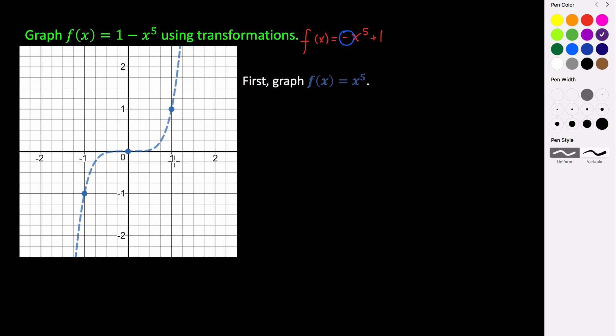So it takes all of our y-coordinates and makes them its opposite. So (1, 1) is going to become (1, -1), (0, 0) is going to stay there. And (-1, -1) is going to become (-1, 1). So we'll have our new graph going through these points here.